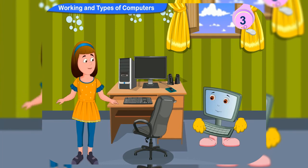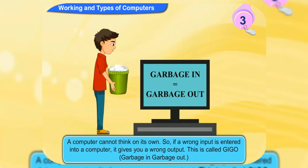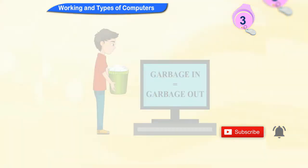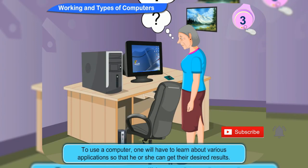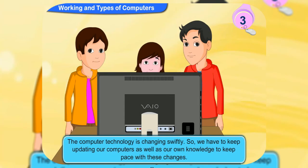What could be the demerits of a computer then? First, a computer cannot think on its own. So if a wrong input is entered, it gives you a wrong output. This is called GIGO, or garbage in, garbage out. Computers are expensive as they require various types of programs called software to carry out different tasks. To use a computer, you will have to learn about various applications to get your desired results. The computer technology is changing swiftly, so we have to keep updating our computers as well as our own knowledge to keep pace with these changes.